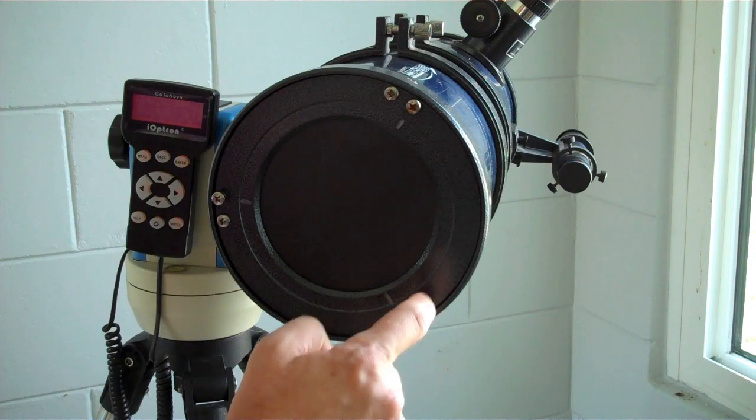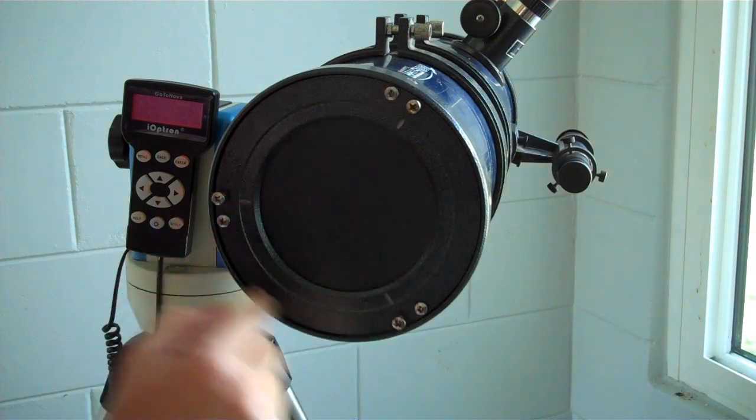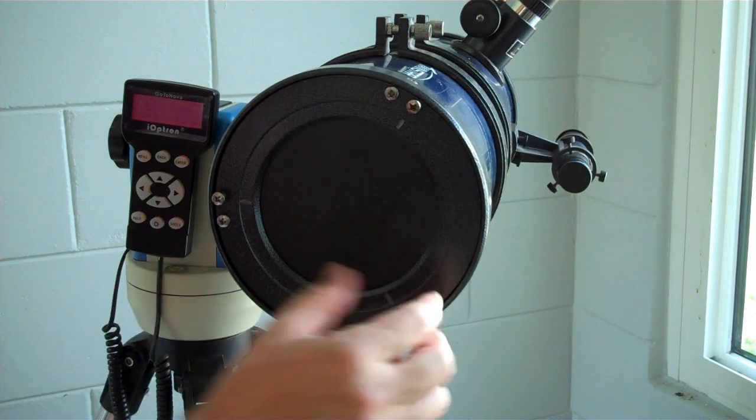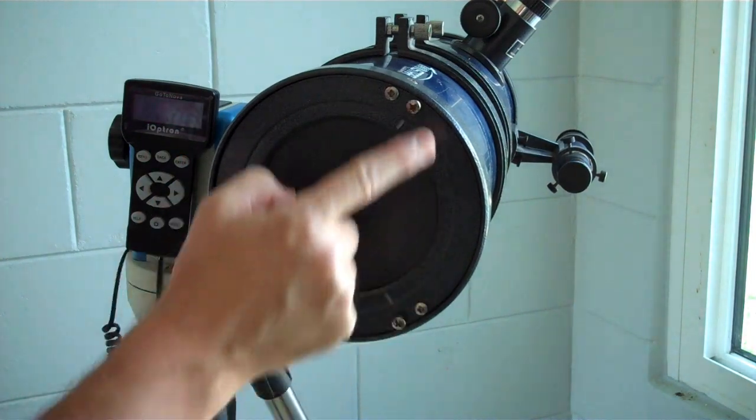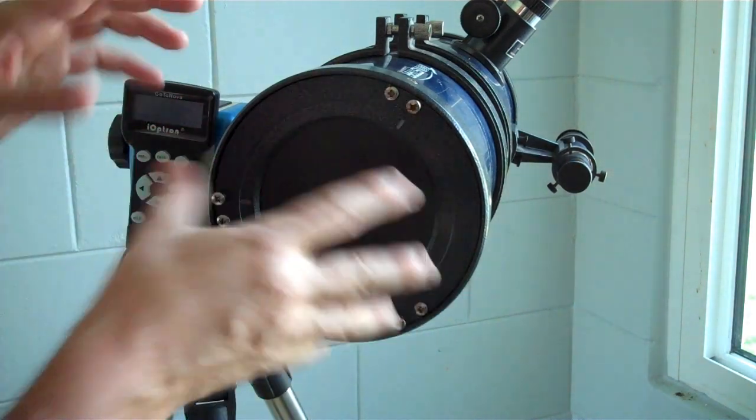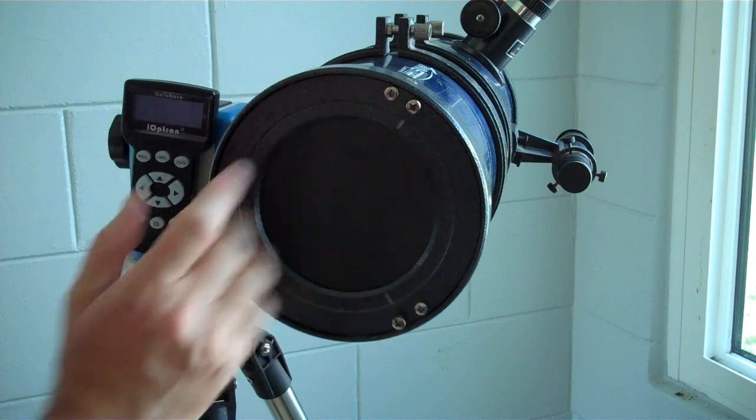Now you could also buy some springs, maybe get slightly longer screws here, put springs on these screws so that the springs are forcing it against these three adjustment screws. And then you could just move the adjustment screws around to adjust it.